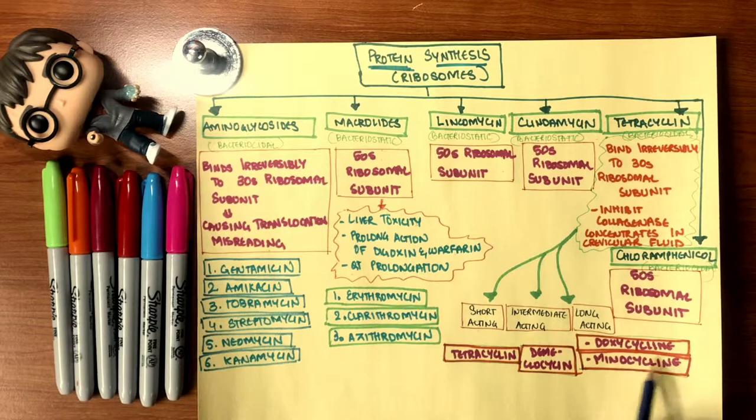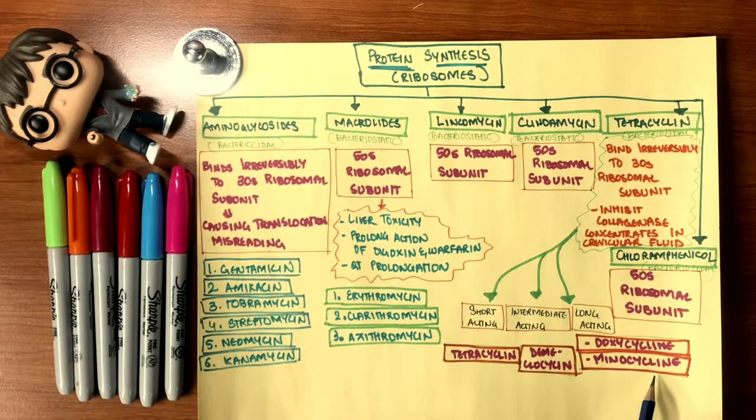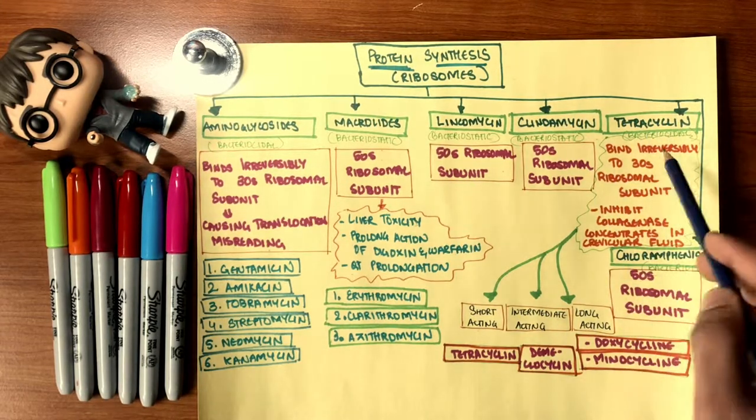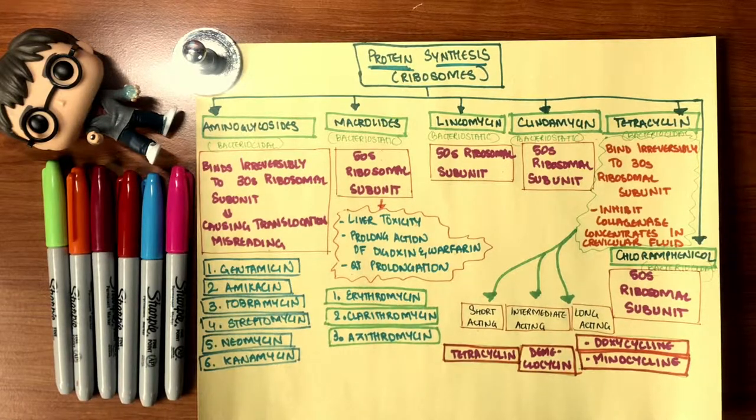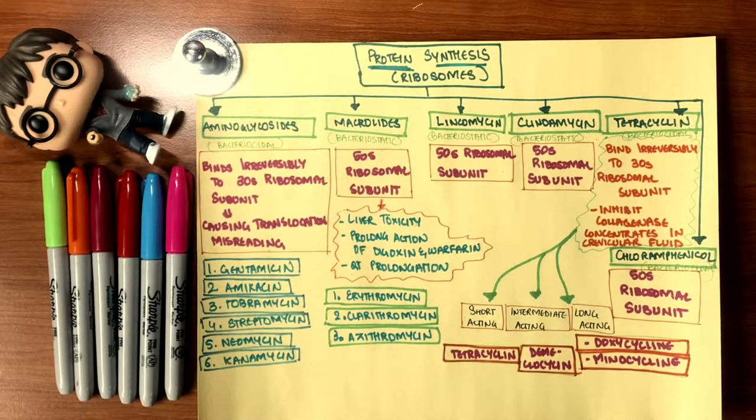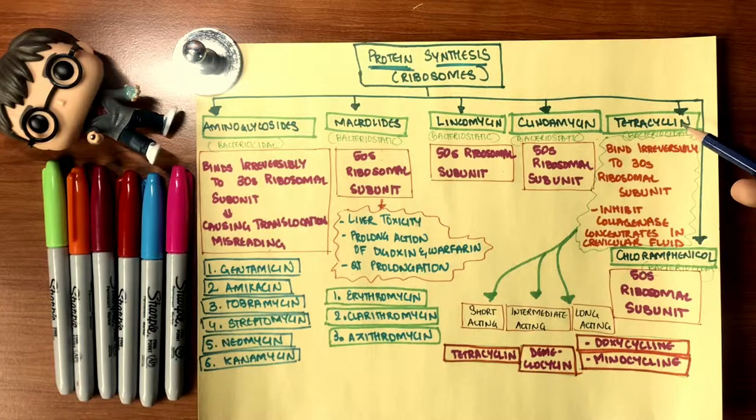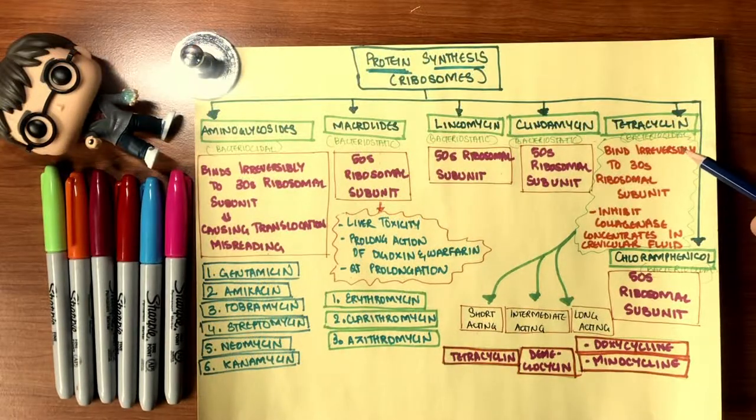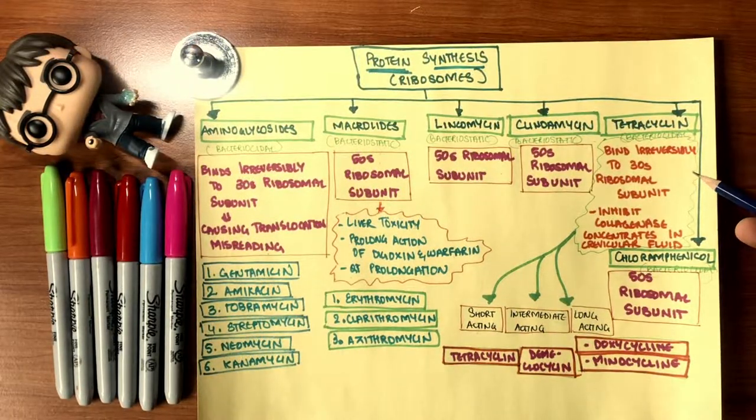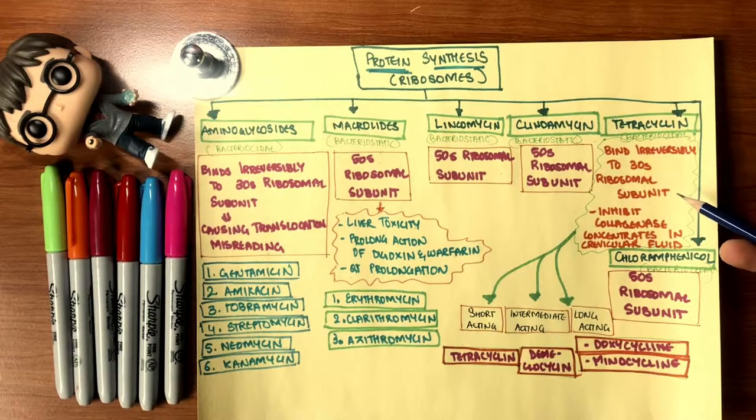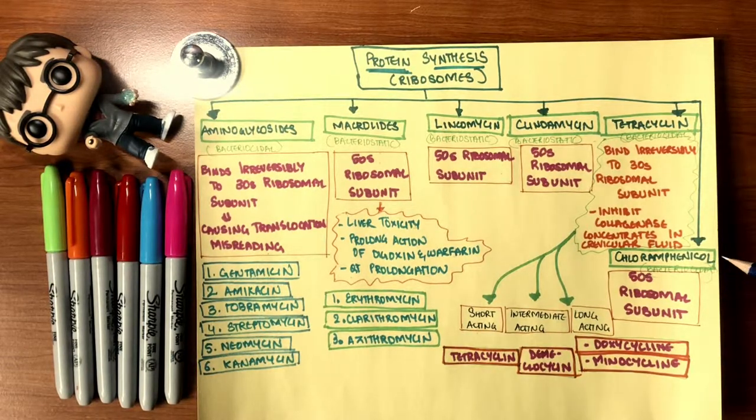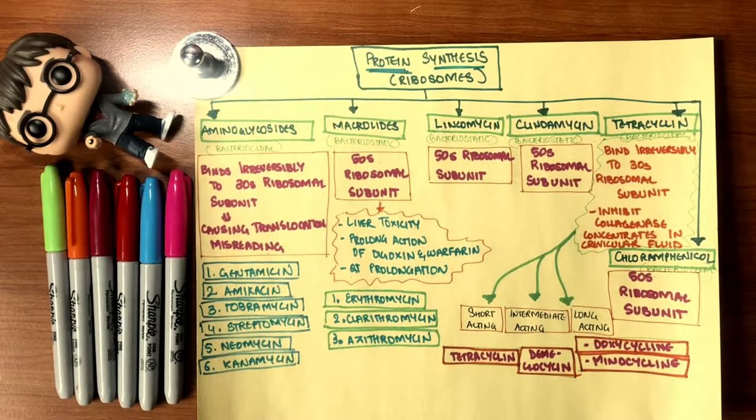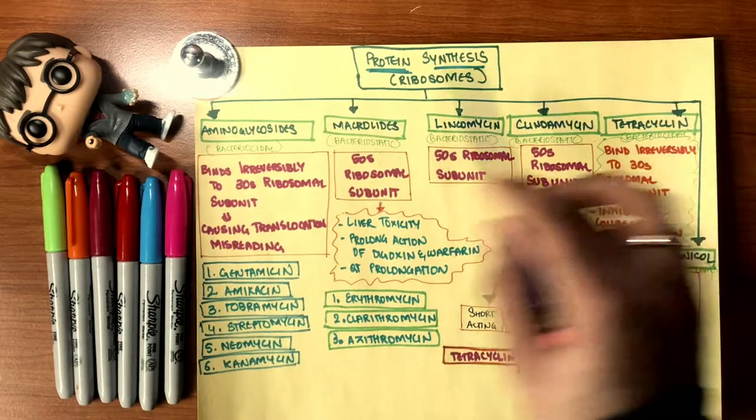Short-acting is tetracycline, intermediate is demeclocycline, and long-acting is doxycycline and minocycline. Now, one thing about tetracycline is that when given to newborns or late pregnancy or early childhood, their teeth will turn out to be brown or dark yellowish in color due to its chelative property. Tetracycline tends to chelate with calcium present; therefore it should never also be taken with milk in the stomach.